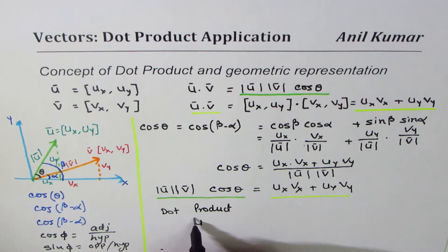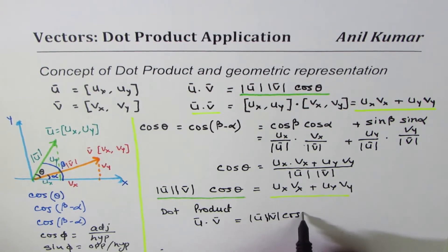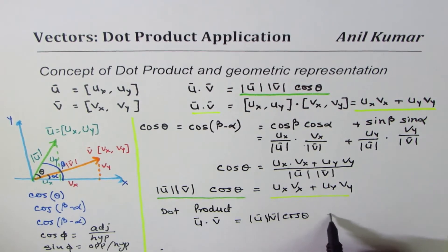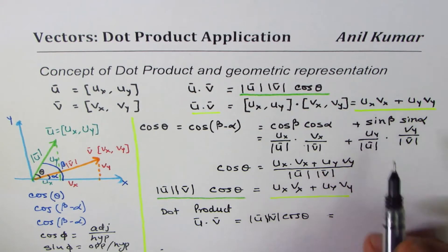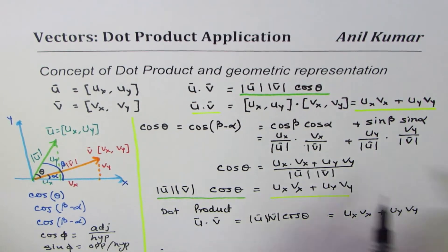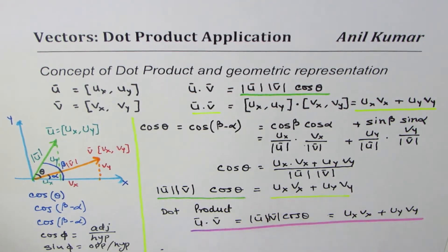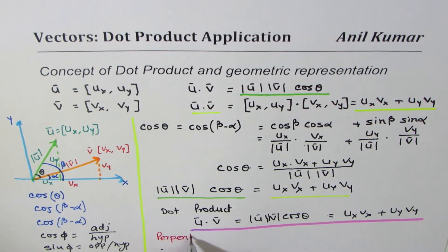So from now on, we can use the dot product of u and v as the product of their magnitudes times cosine theta, where theta is the angle between the two vectors, which is also equal to ux*vx plus uy*vy — the component products. This is our basic formula for dot product. We'll use it in many applications, especially to find projections, and to check conditions for two vectors being perpendicular when the dot product is zero.